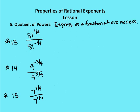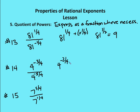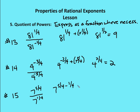Let's look at a couple problems. 81 to the 1 fourth over 81 to the negative 1 fourth equals 81 to the 1 fourth minus negative 1 fourth, which is plus 1 fourth. 1 fourth plus 1 fourth gives 1 half. 81 to the 1 half equals 9, the square root of 81. Next: 4 to the negative 3 fourths over 4 to the negative 5 fourths gives negative 3 fourths minus negative 5 fourths, or plus 5 fourths, leaving 4 to the 2 fourths, or 4 to the 1 half, which equals 2. Then 7 to the 5 fourths over 7 to the 1 fourth gives 7 to the 4 fourths, or 7 to the 1, which equals 7.